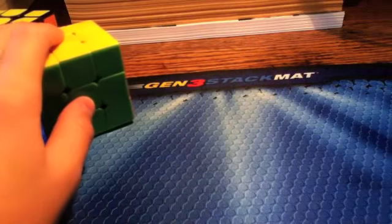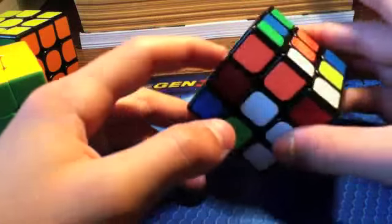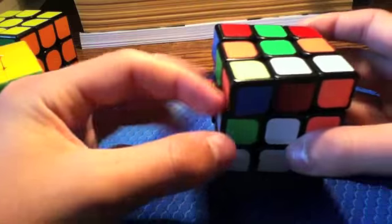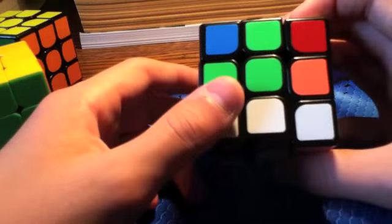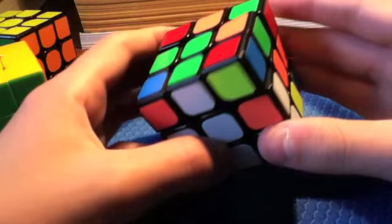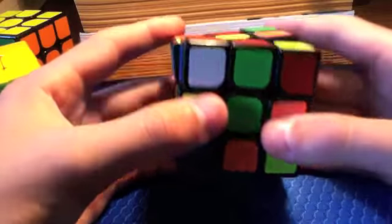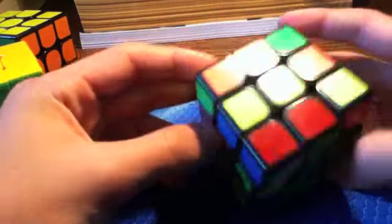Now on to the final solve. For this one, we've got a solved blue edge here, these two edges, and then this one. So this isn't a great position, but it will work. So I'll do L', F, L, F2, R, D', F, D. And that gets a cross.